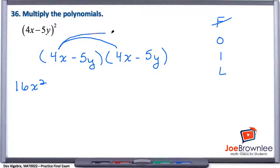Our O means our outside to the outside. So we end up with 4x times negative 5y. Well, that gives us minus 20xy.